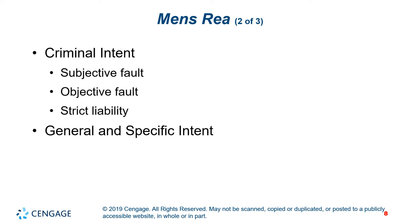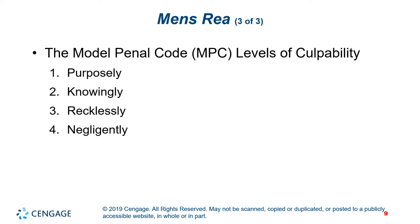General intent is the intent to commit the criminal act forbidden by a statute. Specific intent is the general intent to commit the actus reus of a crime, plus the intent to cause a criminally harmful result. The Model Penal Code has four levels of culpability: purposely, knowingly, recklessly, and negligently.